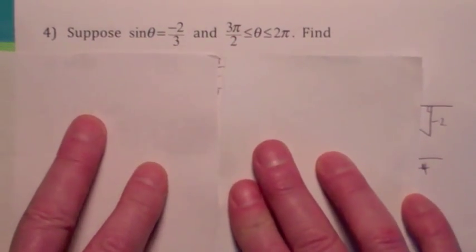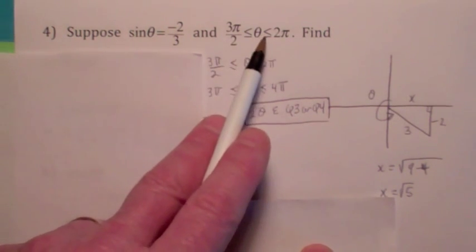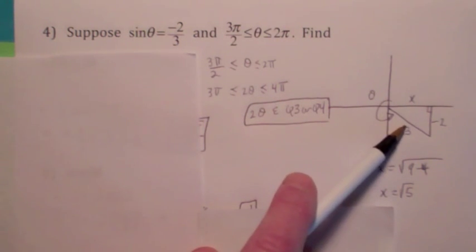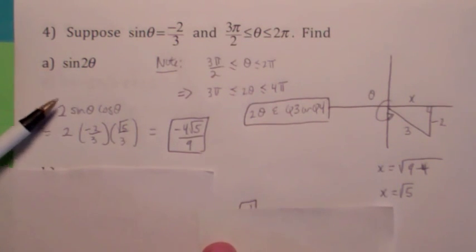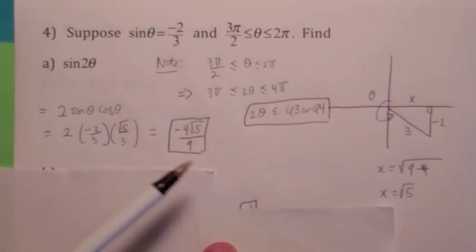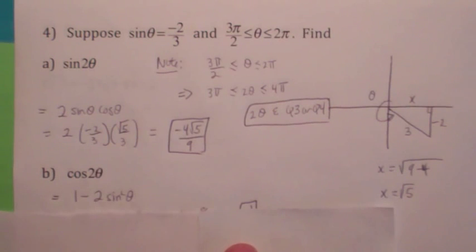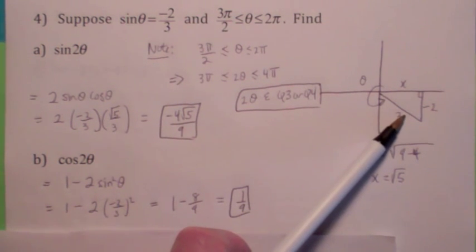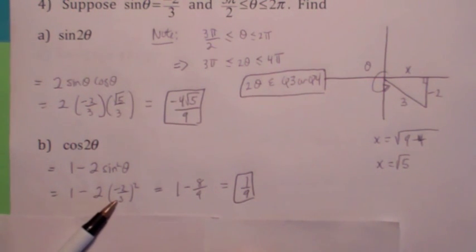Now let's put it all together. Suppose the sine of theta is negative 2 thirds, and theta is in quadrant 4, specifically between 3 pi over 2 and 2 pi. The sine of theta is negative 2 thirds, and you can find the x coordinate is radical 5. To find sine of 2 theta: it's 2 sine theta cosine theta. Since cosine theta is radical 5 over 3, sine of 2 theta equals negative 4 radical 5 over 9. For cosine of 2 theta, using the version 1 minus 2 sine squared theta — since we know sine theta is negative 2 thirds — you get positive 1 ninth.